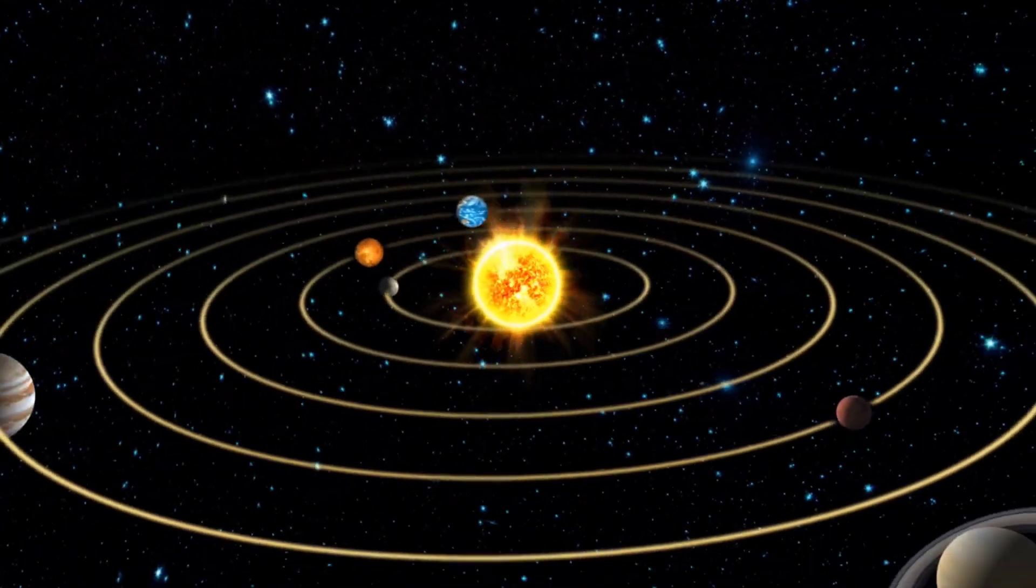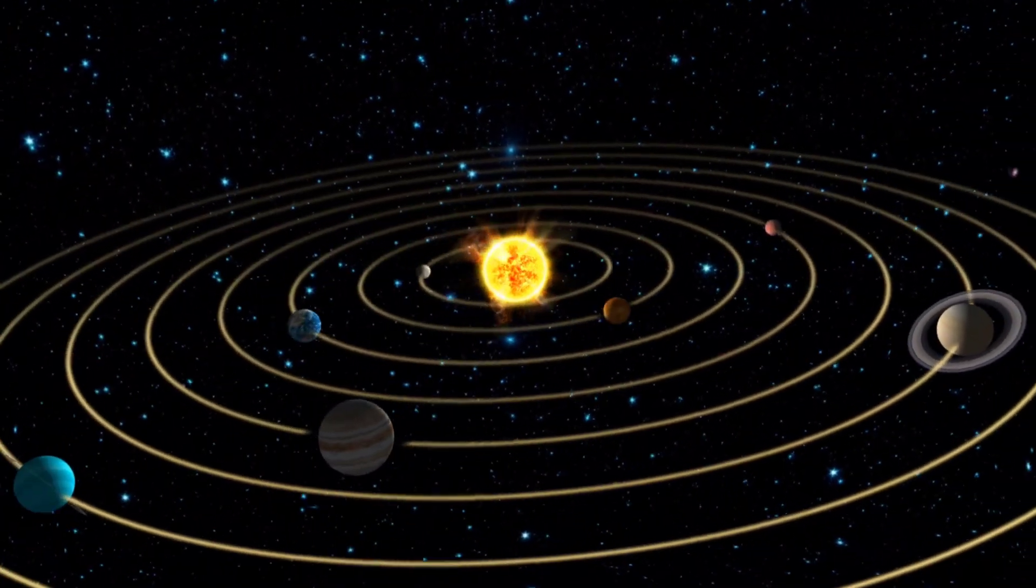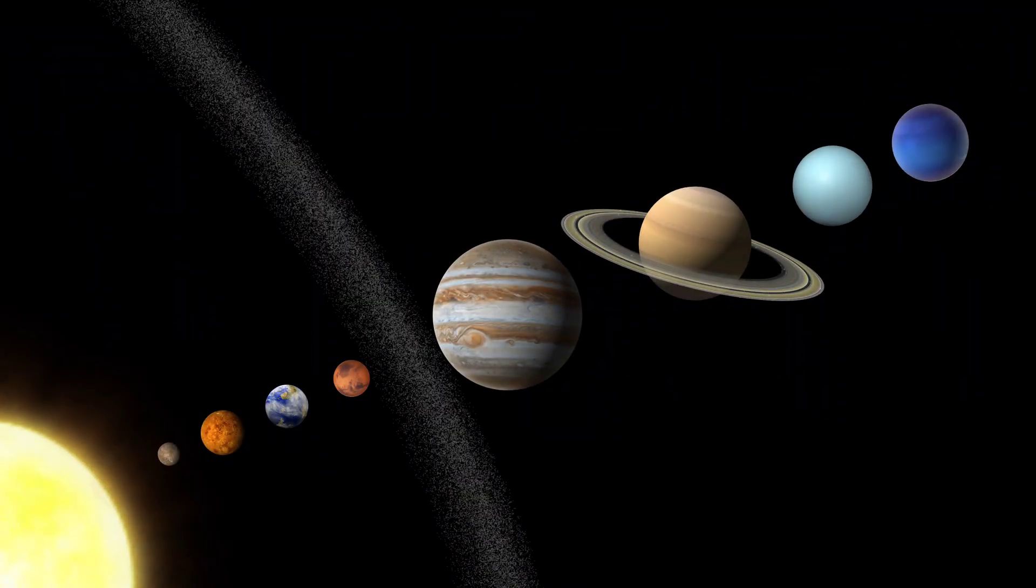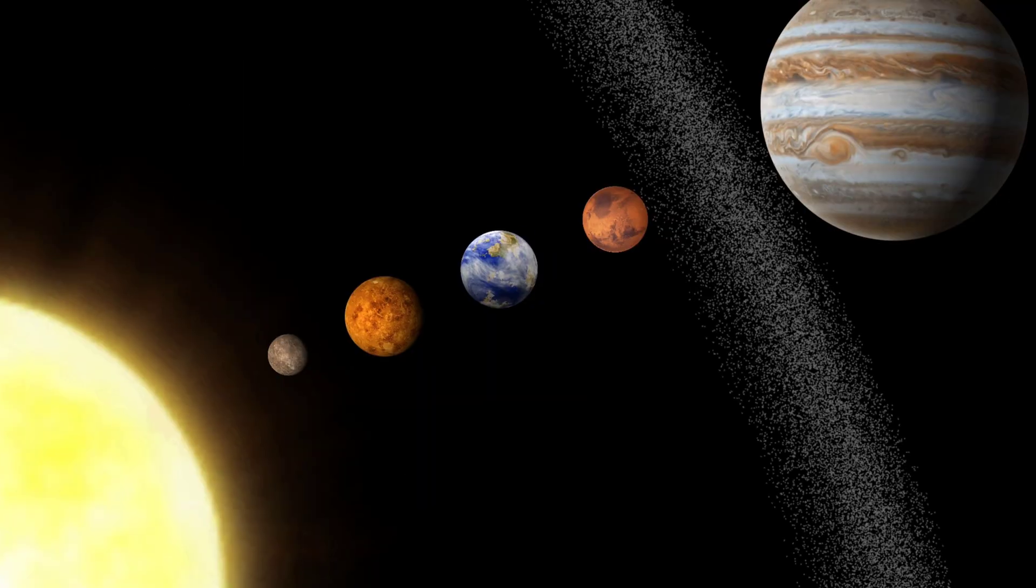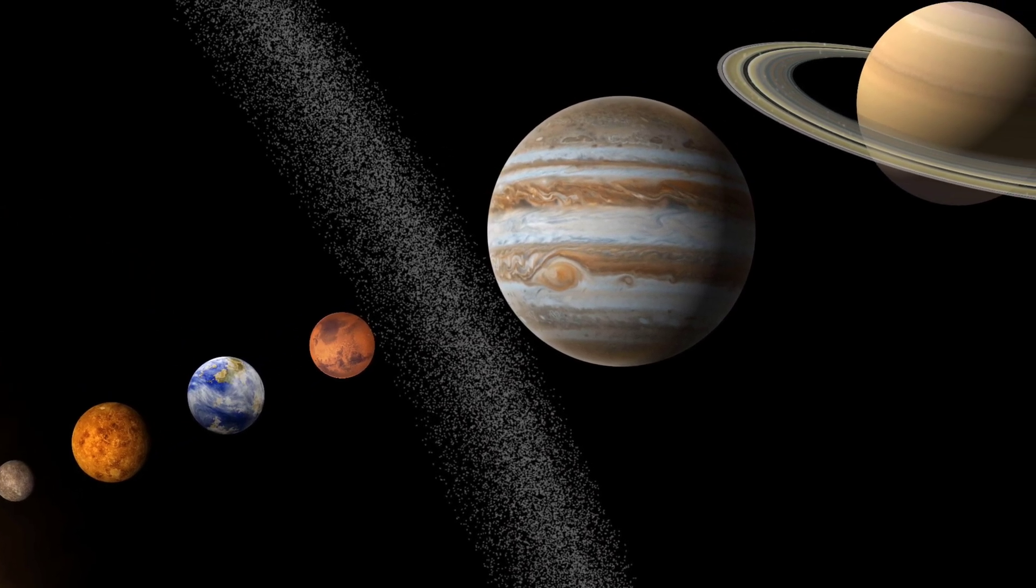You would think our solar system looks pretty much like this, with the asteroid belt in here and the Kuiper belt in there. But the distances between the planets that we see here is just too disproportionate.